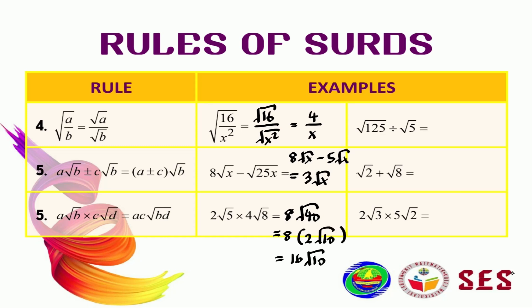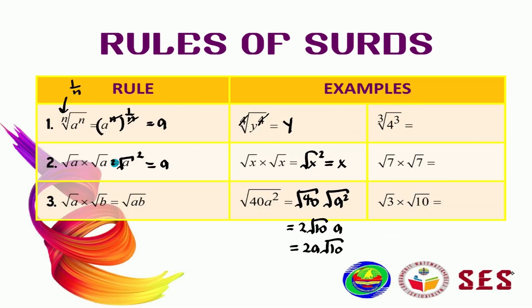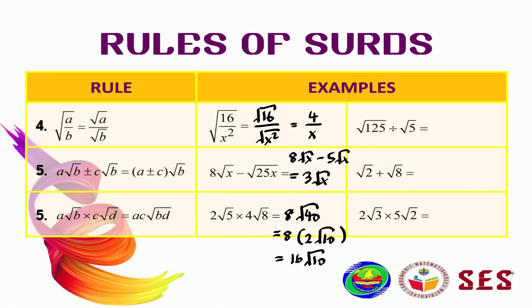Pause this video now to give yourself some time to answer these questions. Ready? Let's check your answers. The answer for number 1 is 4. The answer for number 2 is 7. The answer for number 3 is square root of 30. The answer for number 4 is 5. The answer for number 5 is 3 square root of 2. And the last one is 10 square root of 6.